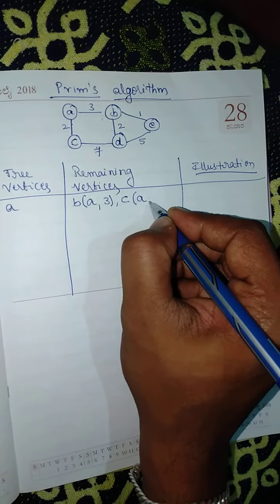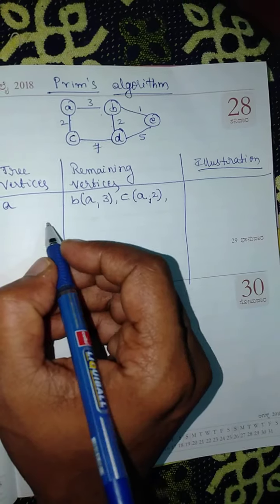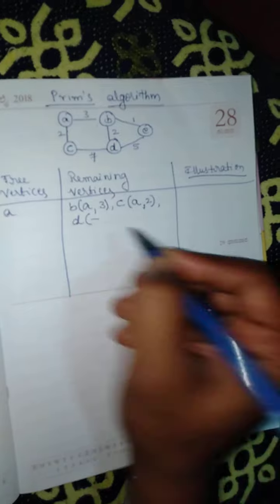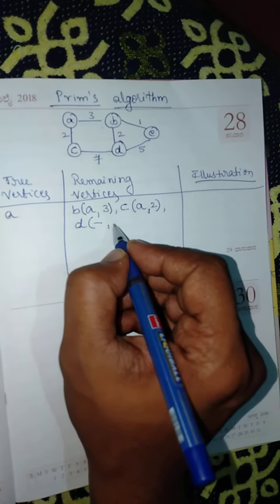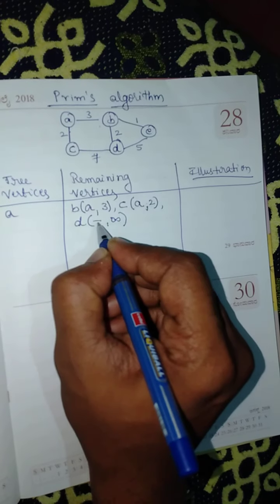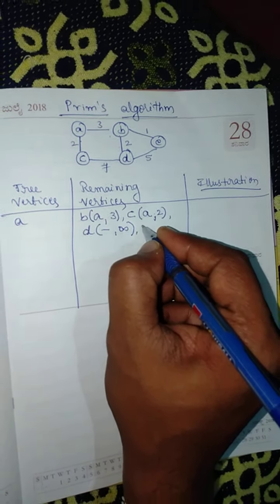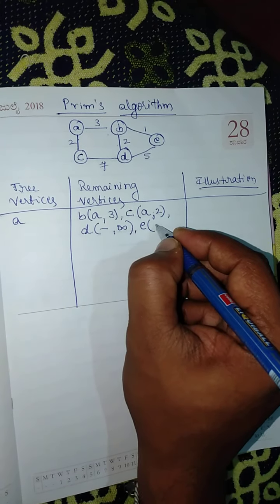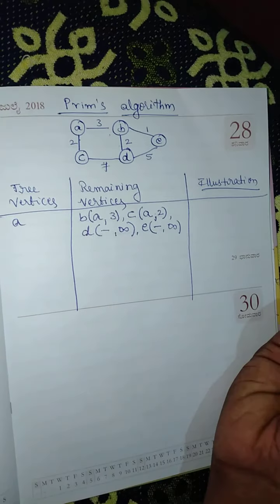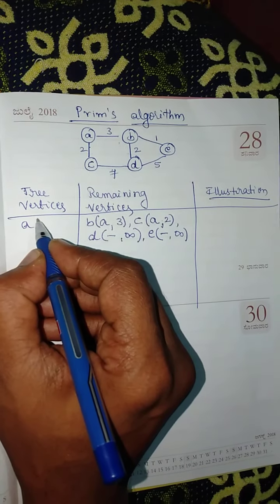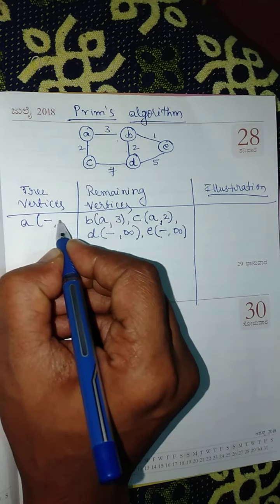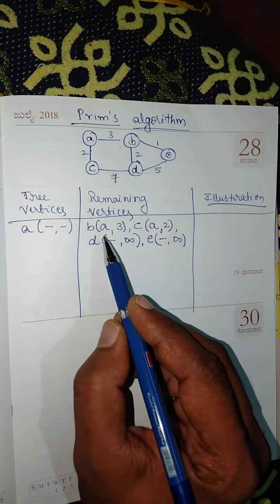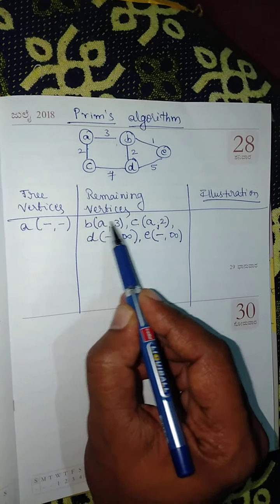Vertex D is not having any direct edge from A, and hence for this iteration it is defined as infinity. Similarly, vertex E cannot be reached from A — it is not having any direct edge — therefore dash/infinity. So for selecting the first vertex we write nothing for the chosen edge.